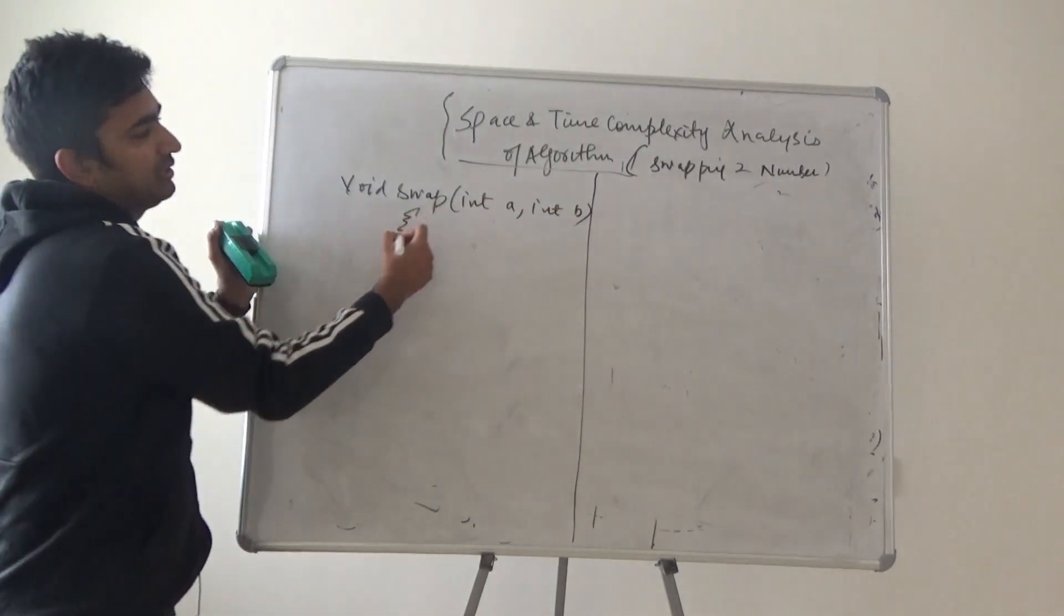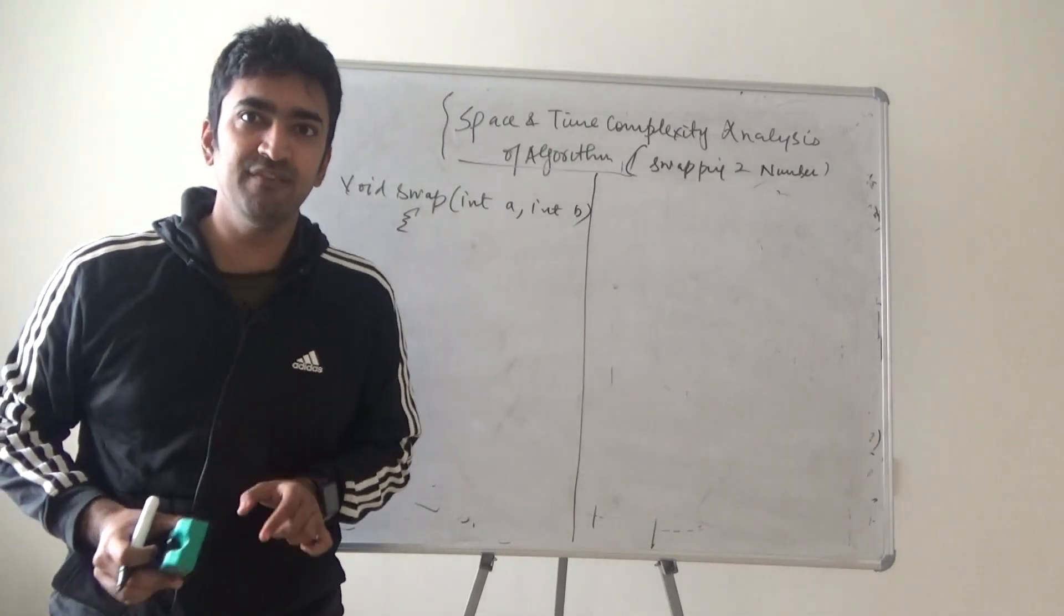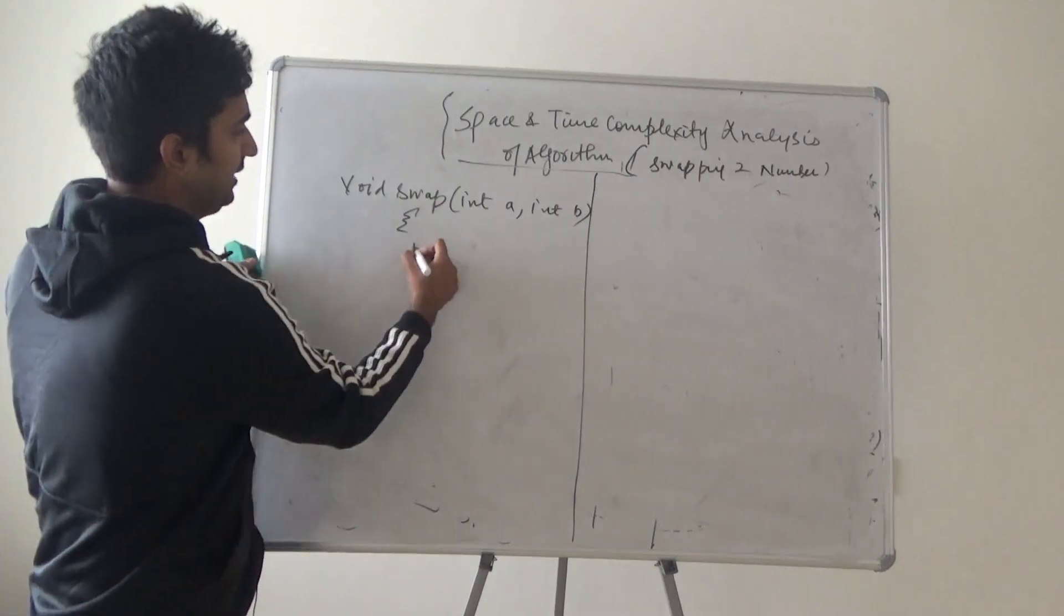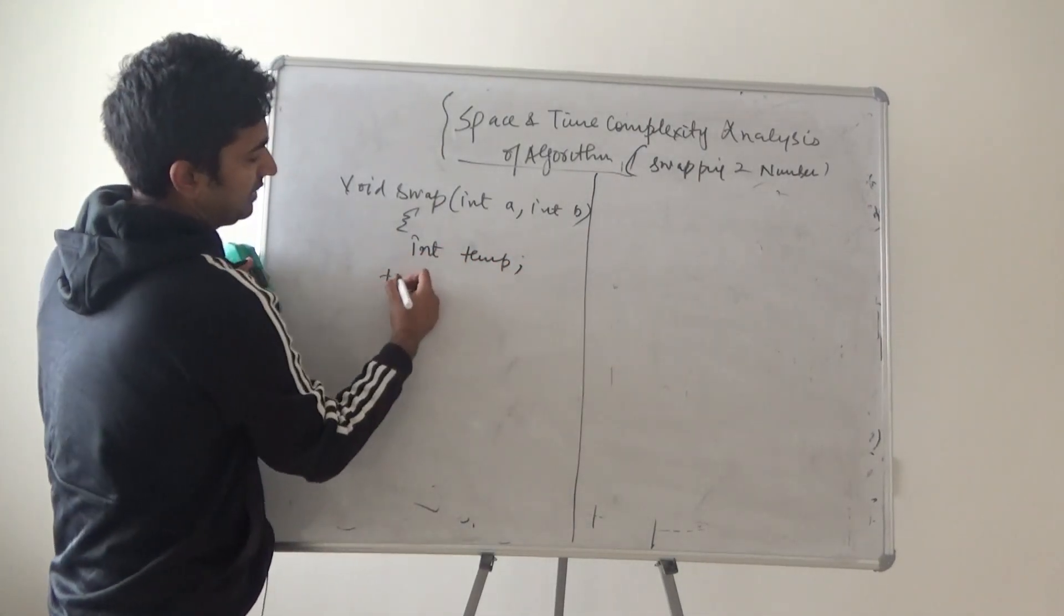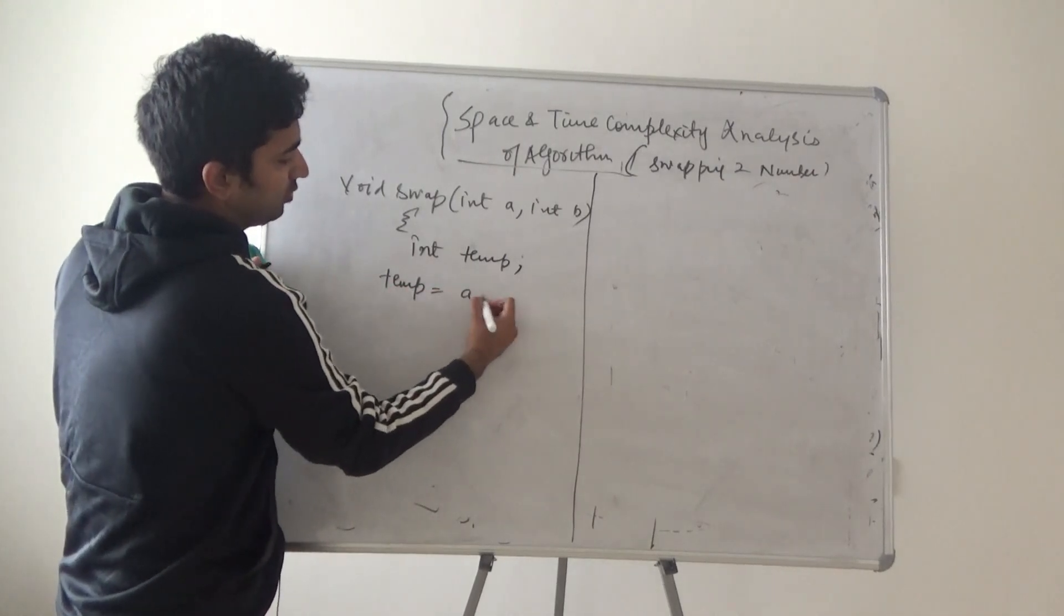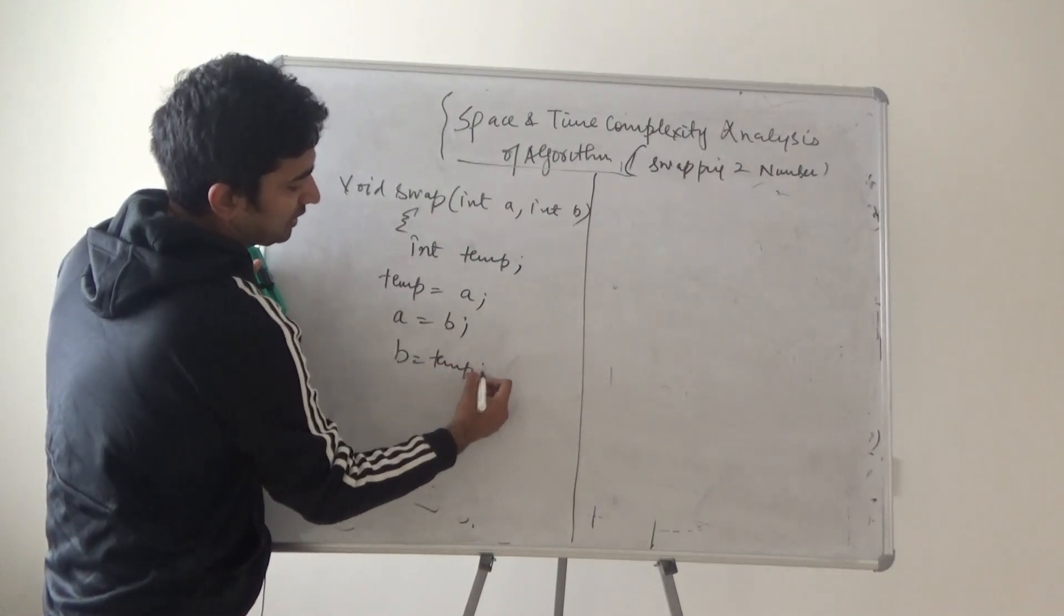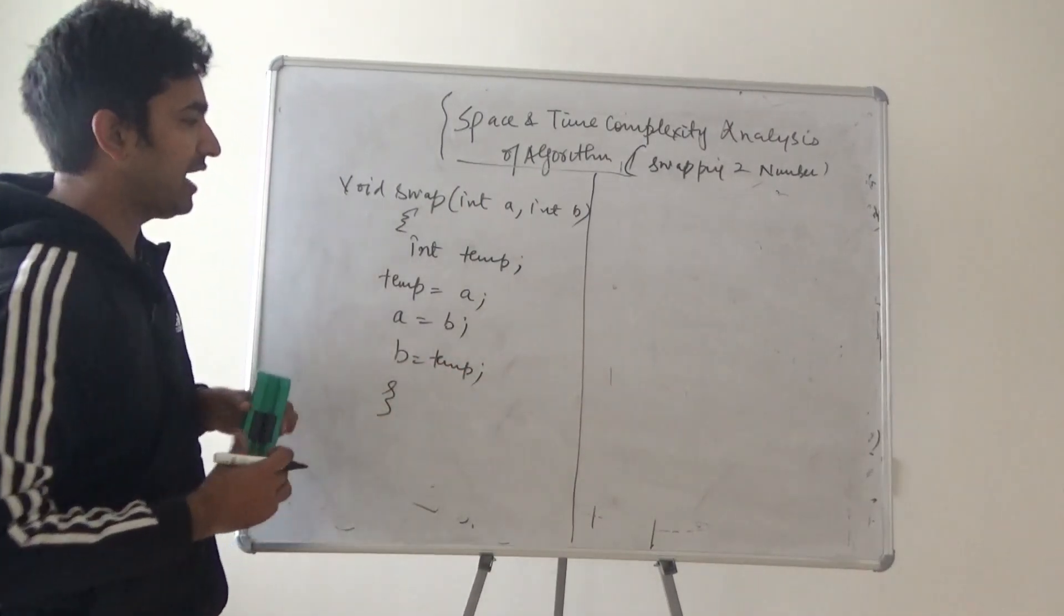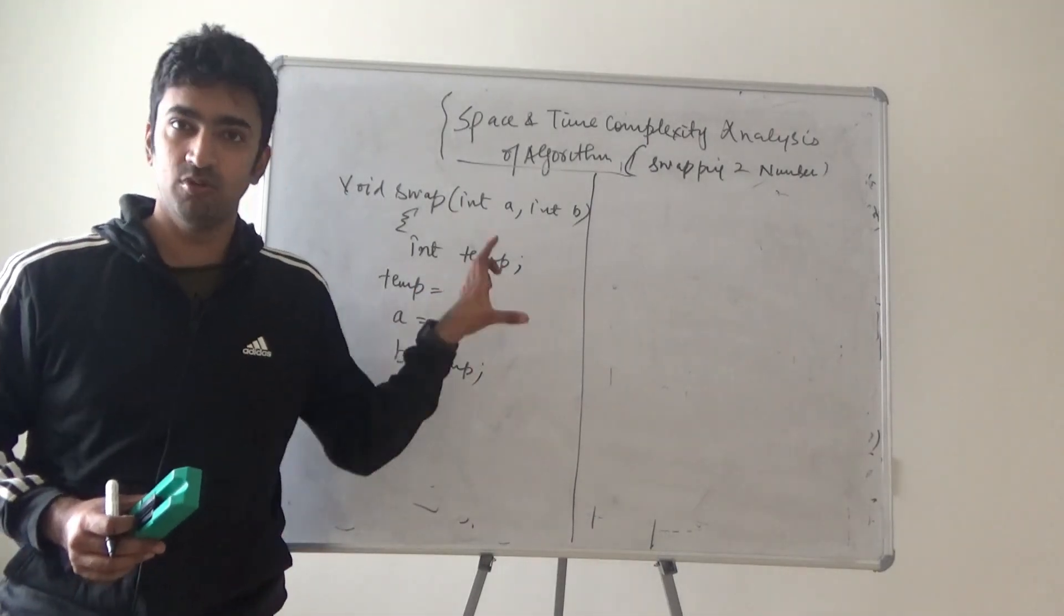I'm writing void swap and I'm using int a and int b. This is a function definition of swapping of two numbers using a temporary variable. I'm writing int temp I have declared the temporary variable and I'm writing temp is equal to a, a is equal to b, b is equal to temp. This is the code I have written for this particular logic.